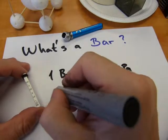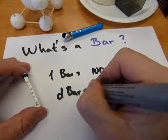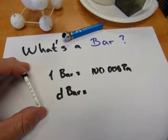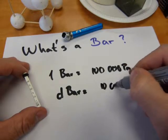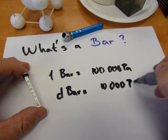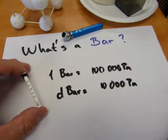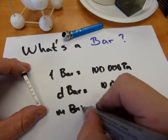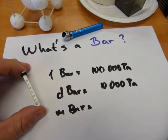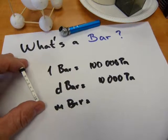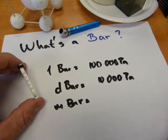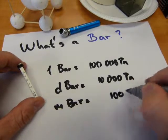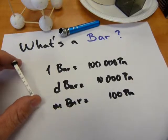Decibar is used to measure pressure of water and it's 10,000 Pascals. The millibar is used in measuring pressures of air in storms, in meteorology and weather. It's 100 Pascals.